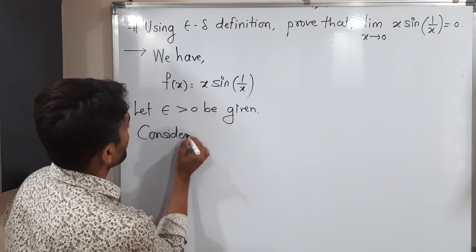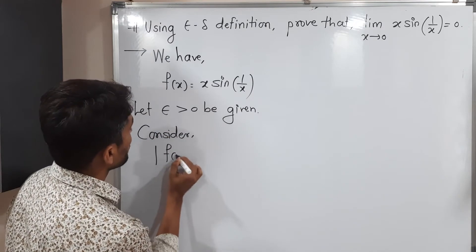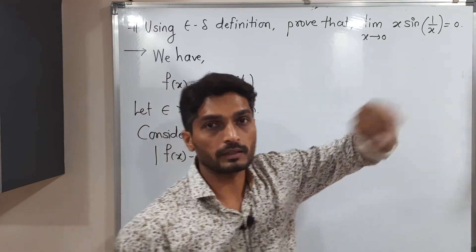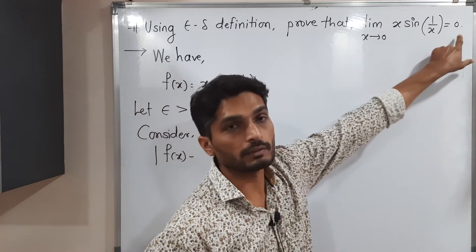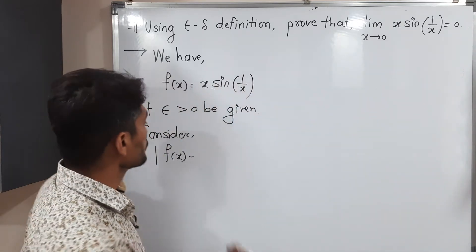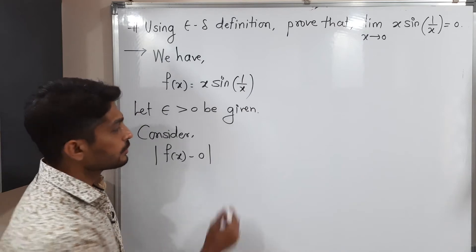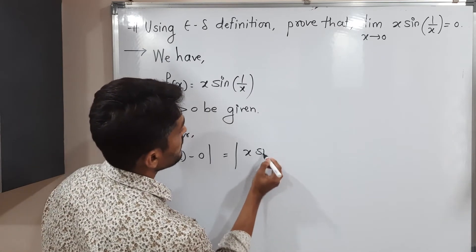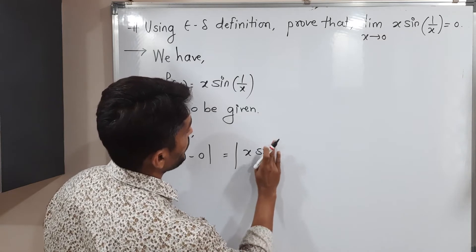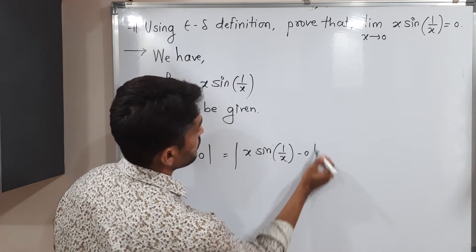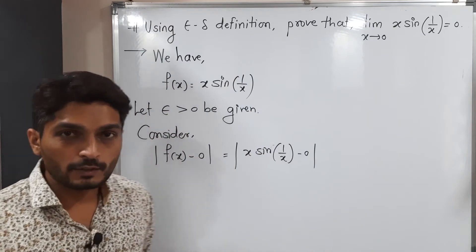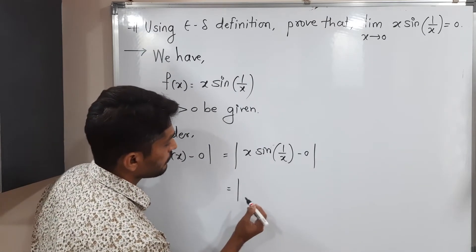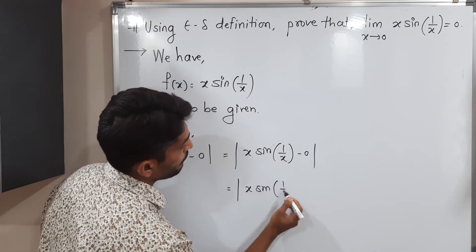So let us consider. I am considering mod f of x minus 0. So this is equal to mod x sin 1 by x minus 0. If you subtract 0 from anyone, you will have the same term. So we will have mod x sin 1 by x.